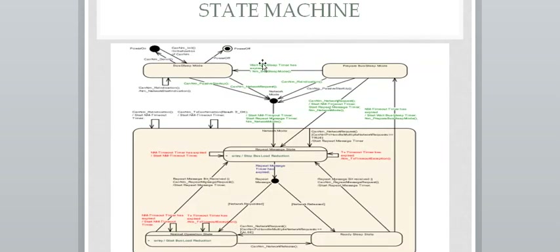State machine detailed overview: as we know, we have three modes — Bus Sleep Mode, Prepare Bus Sleep Mode, and Normal Mode. In Normal Mode, we have Repeat Message State, Normal Operation State, and Ready Sleep State. When the CAN-NM module gets initialized, we will be in Bus Sleep Mode.